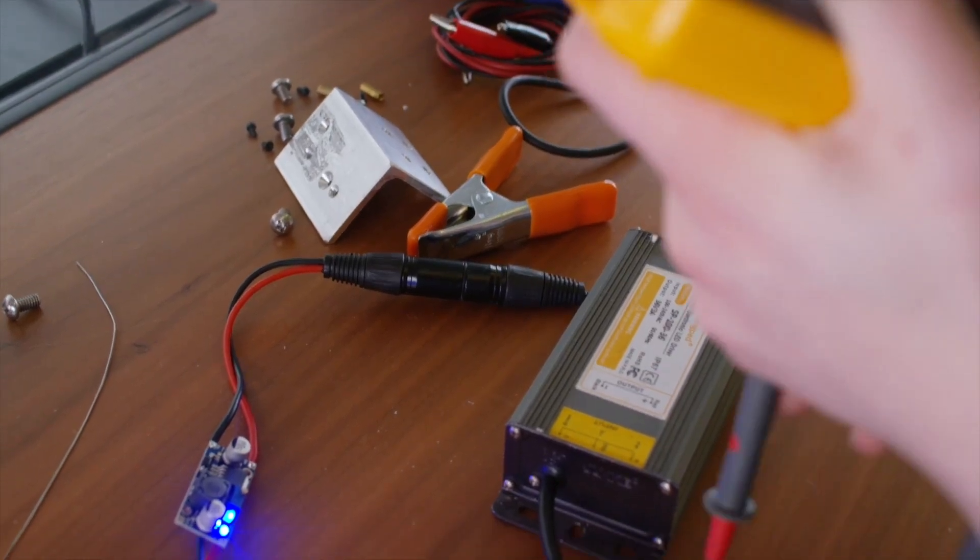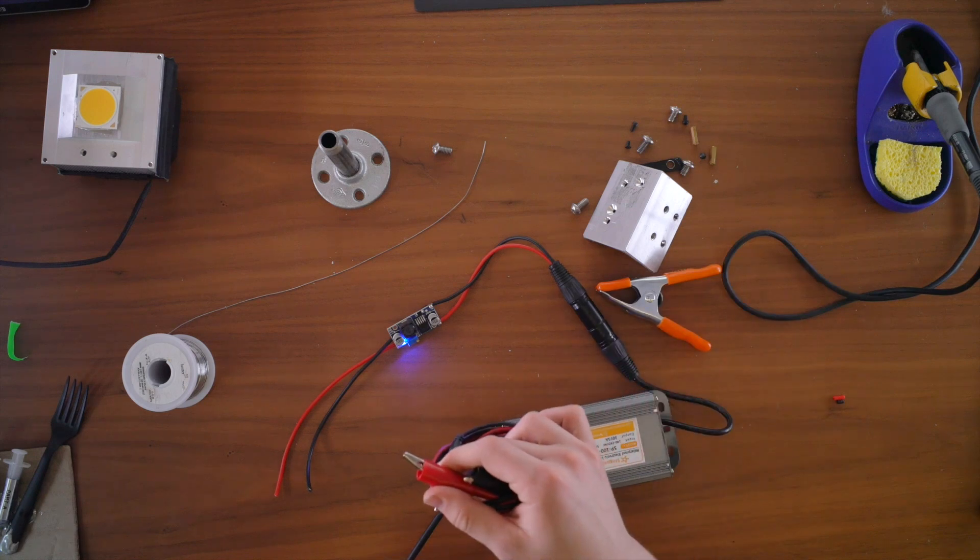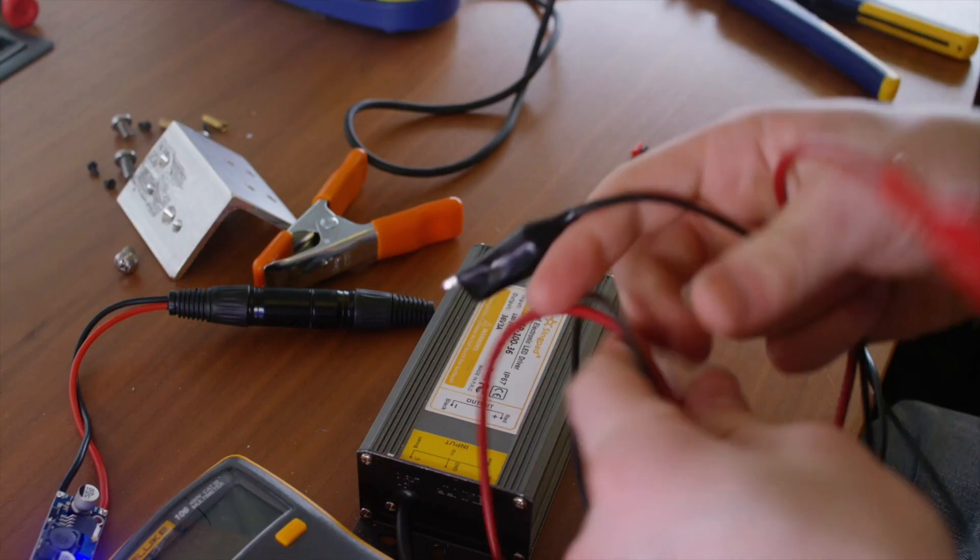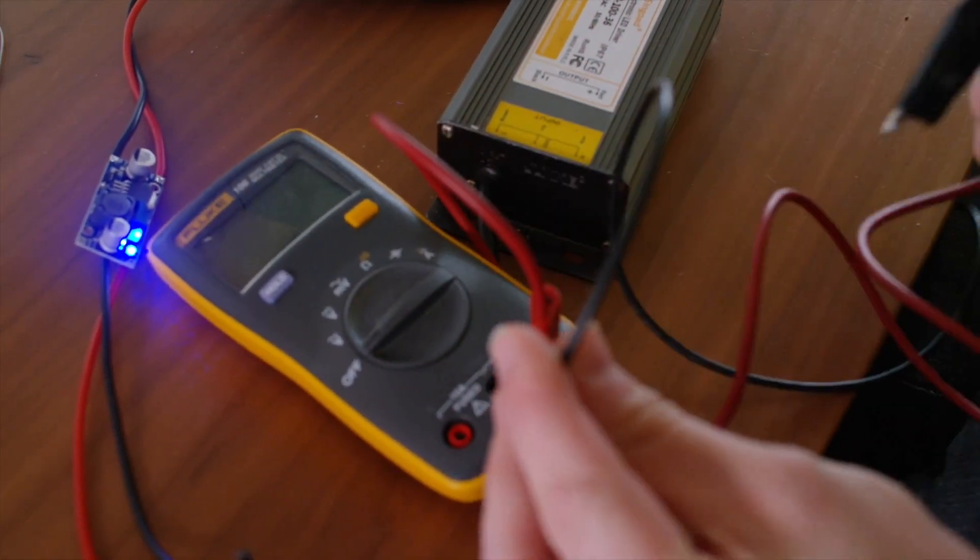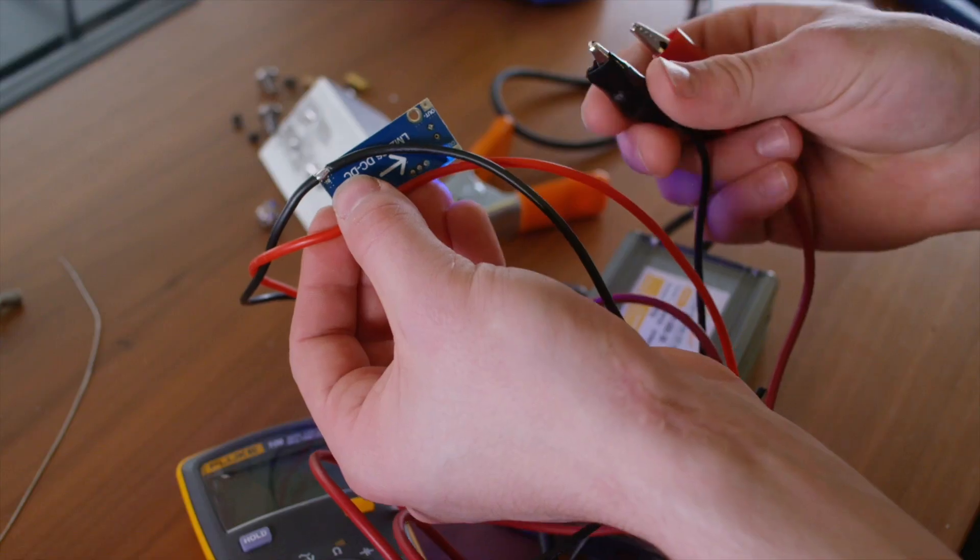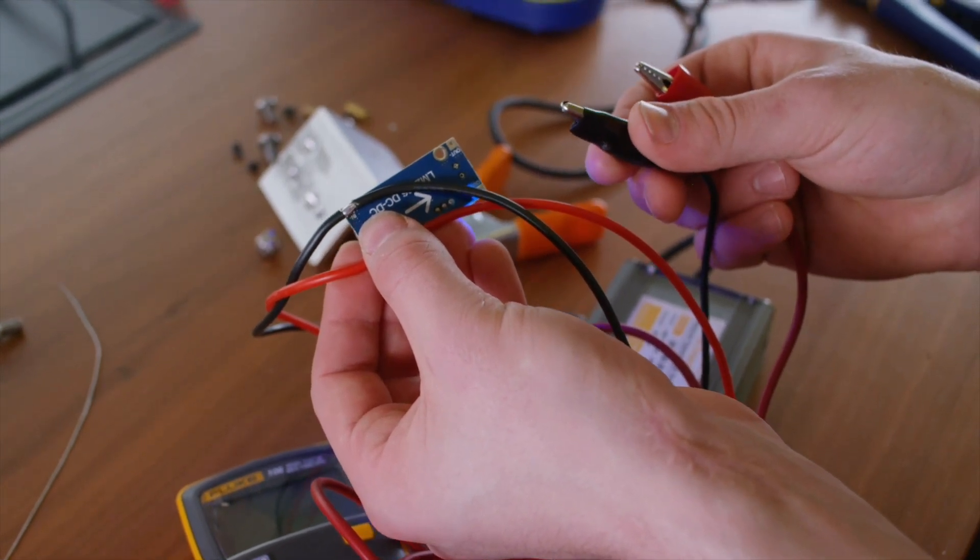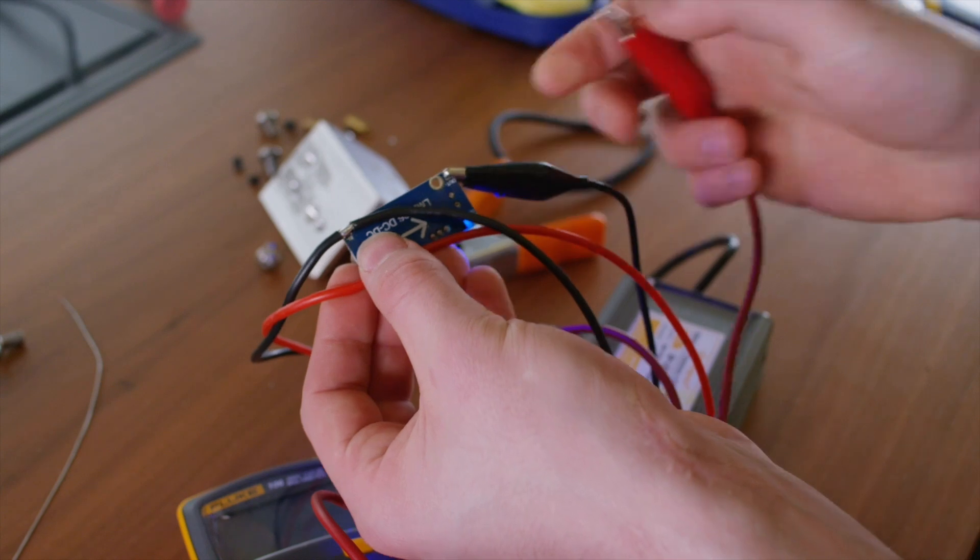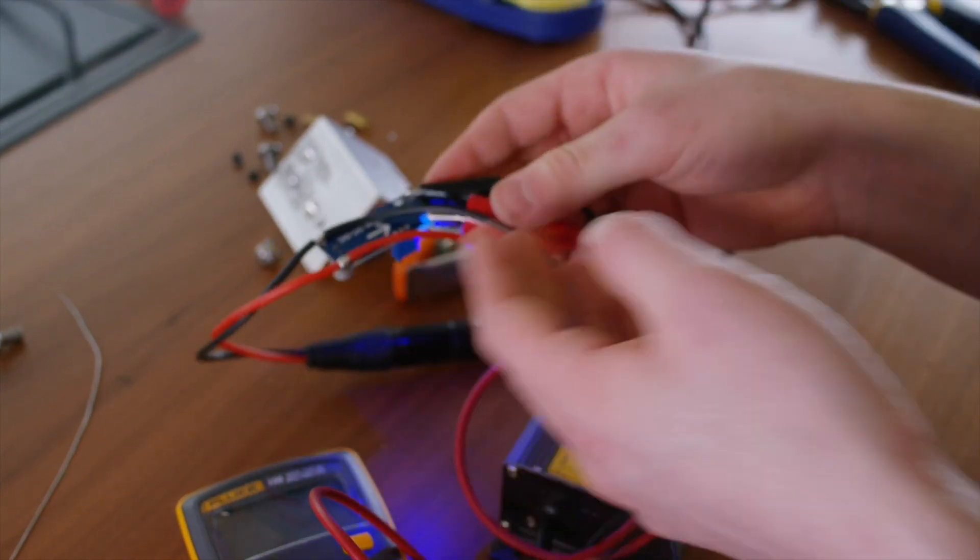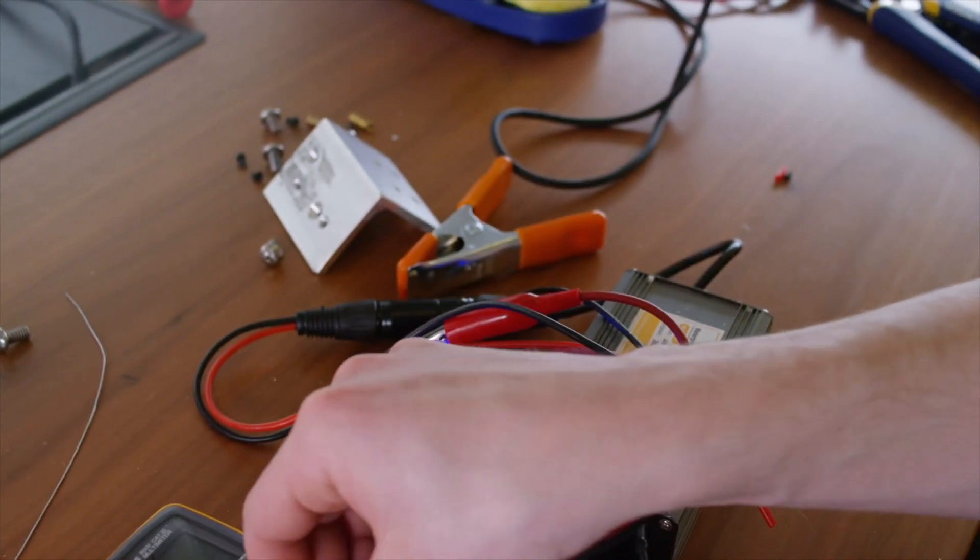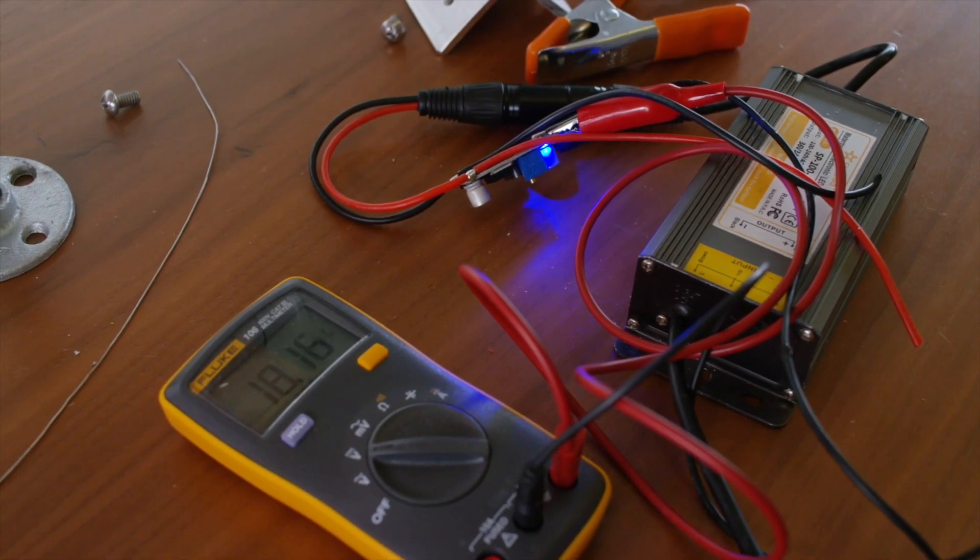So next, you can take your multimeter, and I'm going to take the probes off it and put the little alligator clamps on it. Positive goes to the port all the way on the right, and negative goes to the middle port. Now I'm going to grab the pads on the back of the voltage regulator with the alligator clamps. Negative one gets the black wire, the positive one on the output side gets the red wire. Now I want to check the voltage on the multimeter. That is reading 18.16 volts.